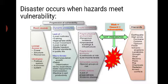Unsafe conditions include: fragile physical and environmental settings, dangerous locations, unprotected buildings and infrastructure, fragile local economy, livelihoods at risk, low income levels, vulnerable society with special groups at risk, lack of public action and preparedness, and endemic disease.